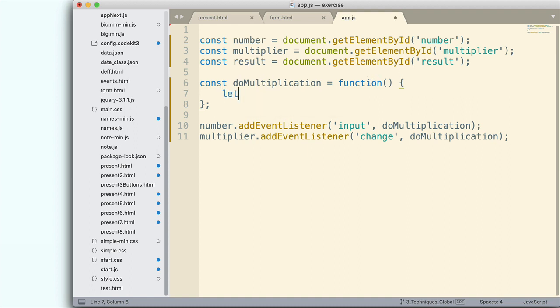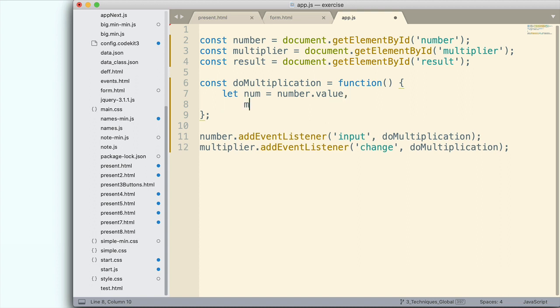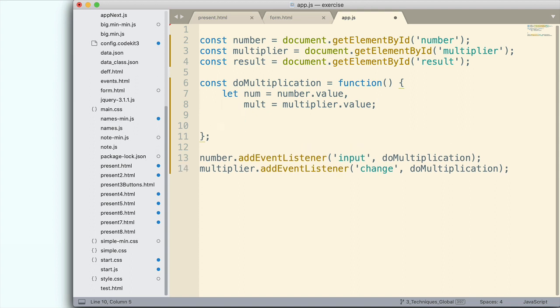So to set this up let me first grab the values. Number.value I want to grab that one and then I also want to grab the multiplier.value like that. So we have both of those numbers. So once we have these values we can go ahead and put them in the result field and we'll just multiply them together like this.